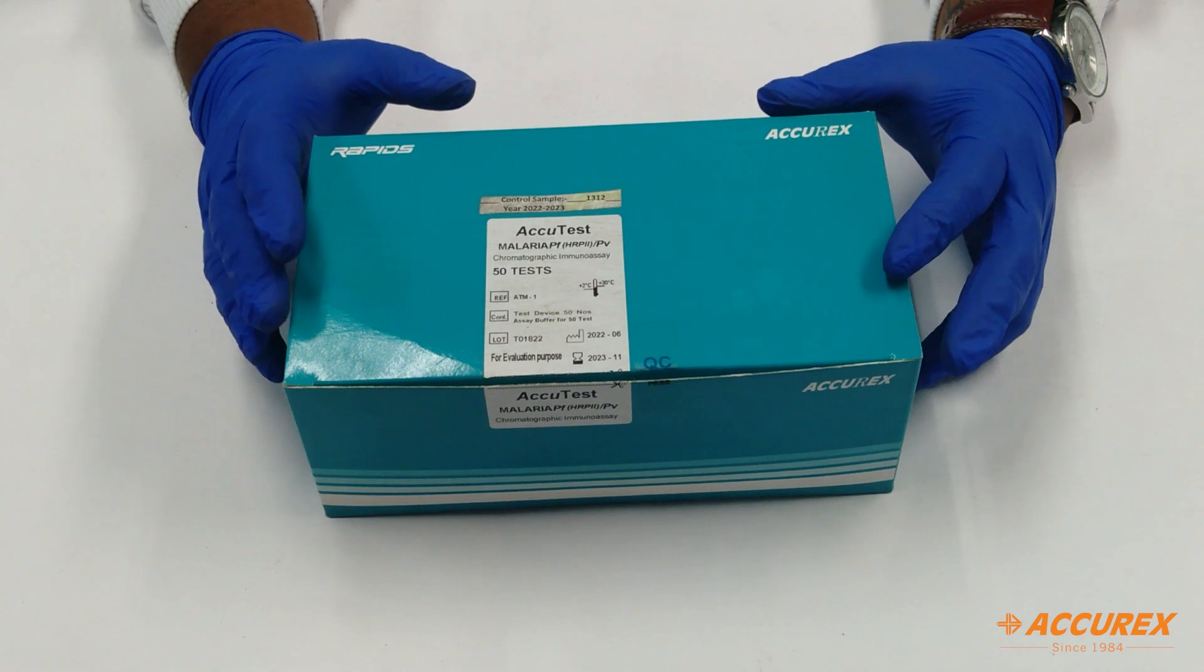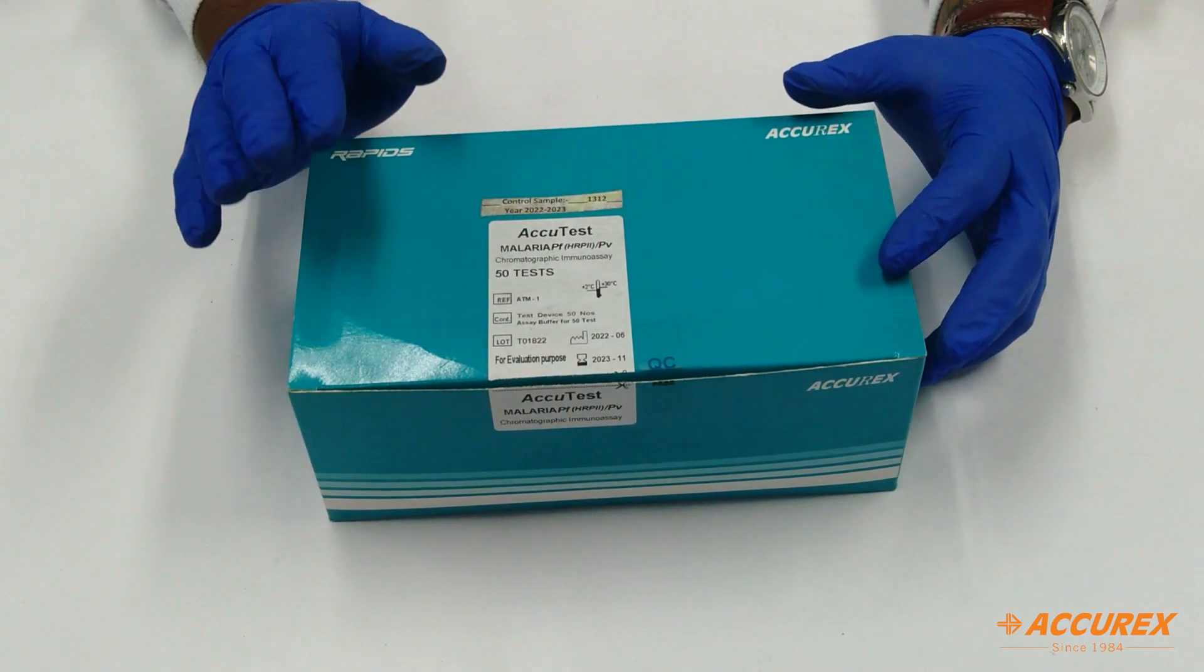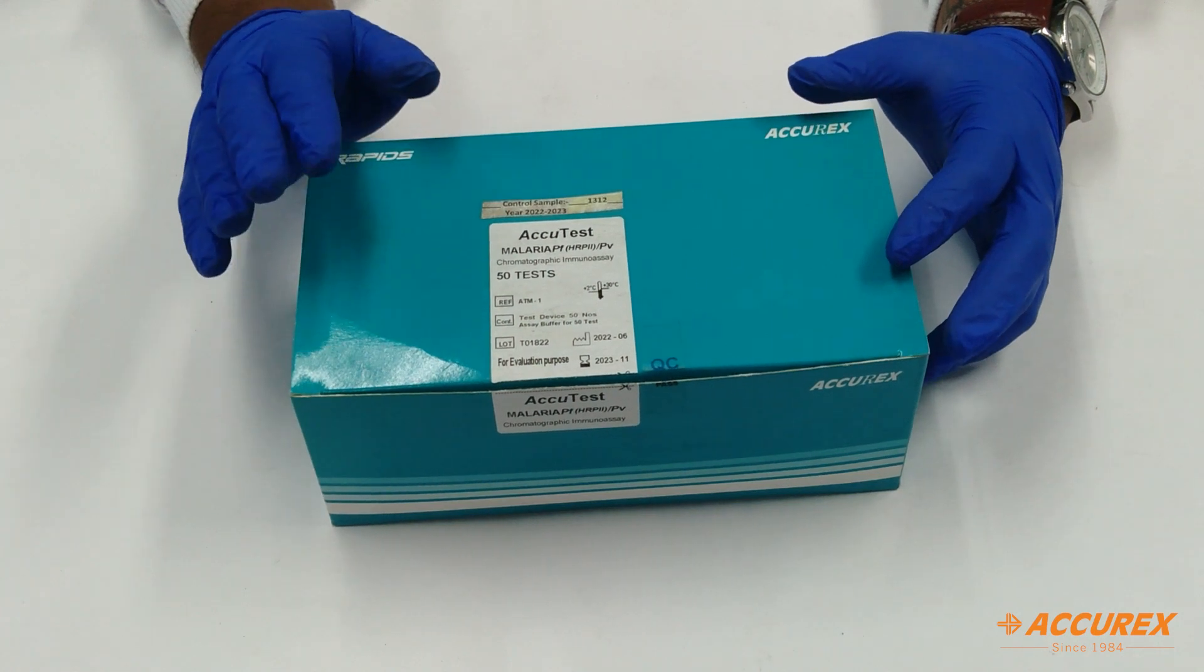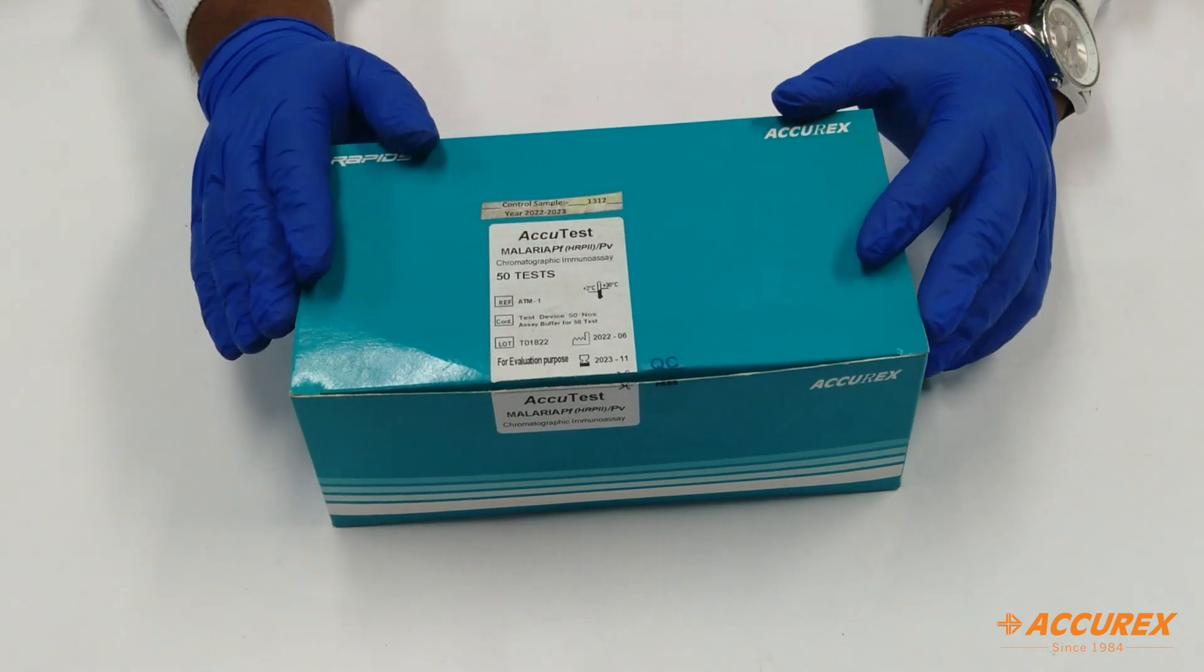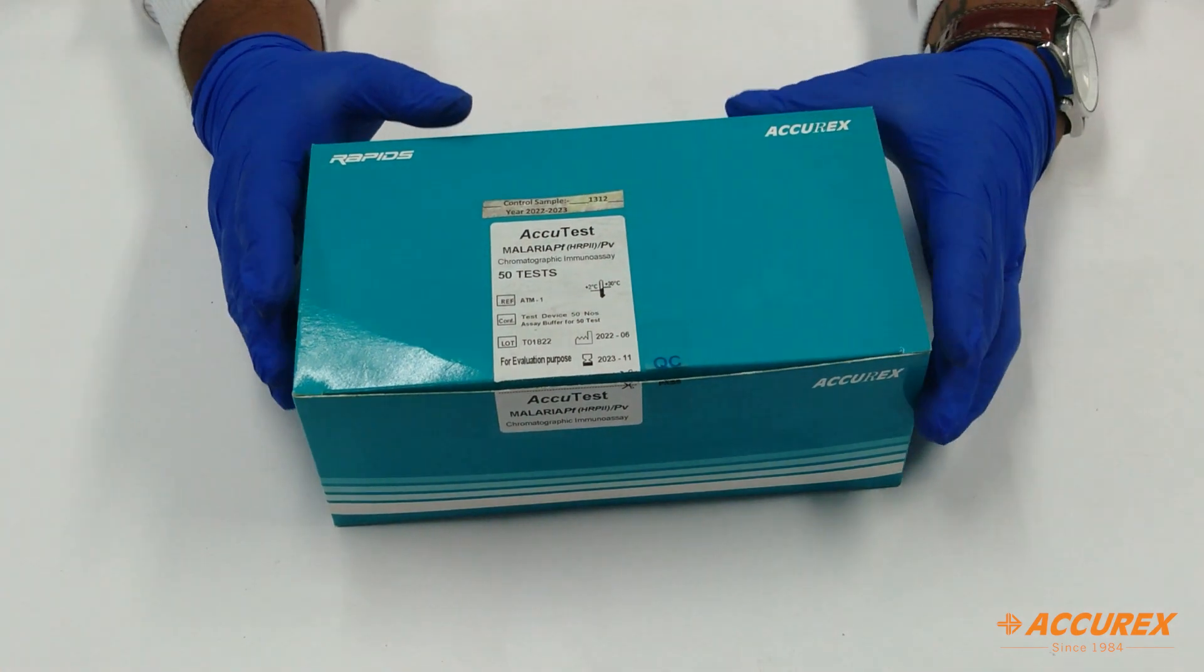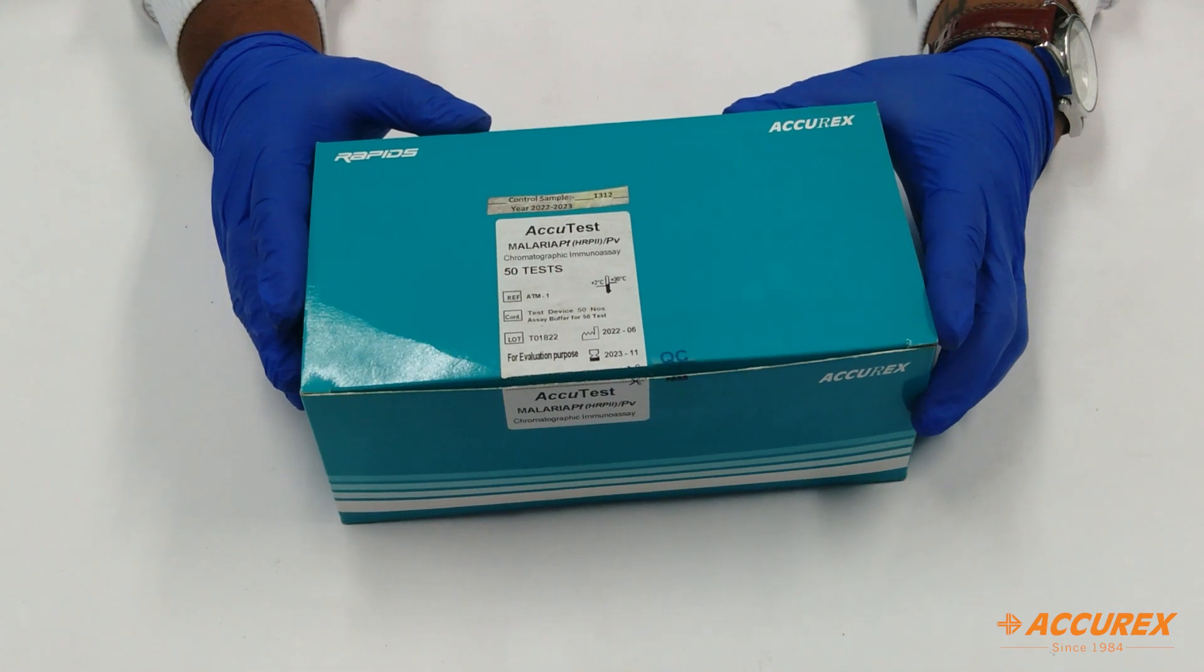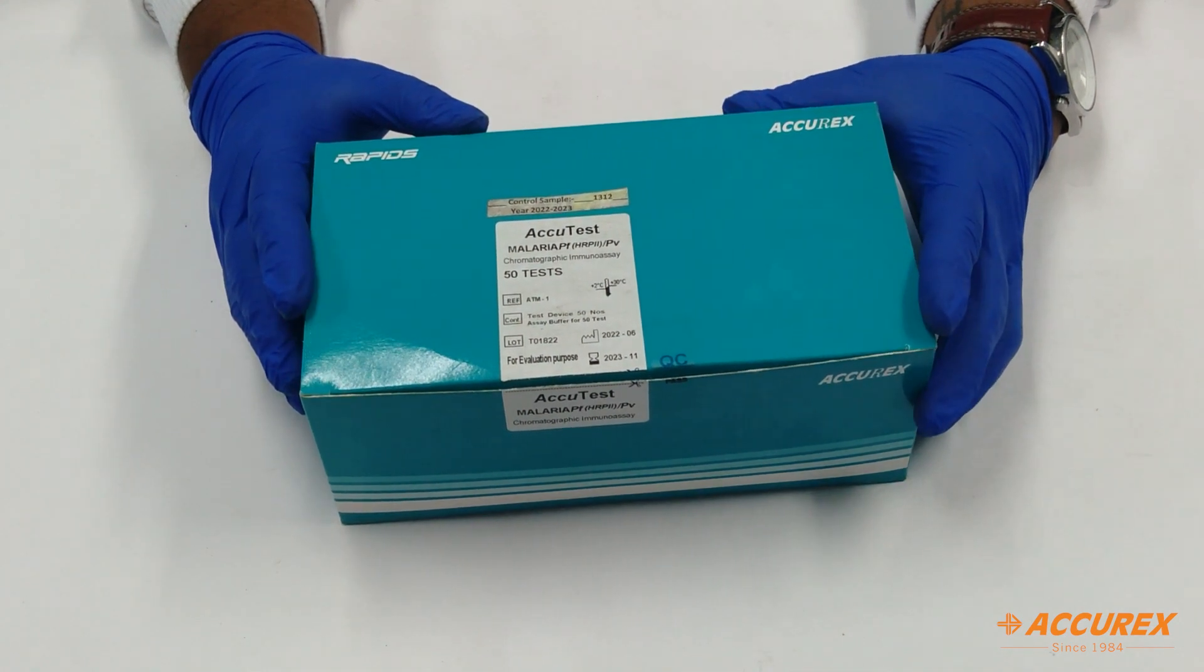So before moving to the component part, first we will see what are the precautions needed to be taken for handling or doing the malaria test. So first of all, we need to take the blood sample. Blood sample needs to be collected in an EDTA tube or directly fingertip sample can be used.